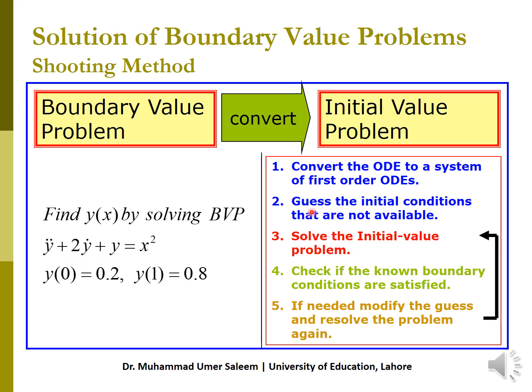We make an initial guess and solve the initial value problem — this is the first attempt. Then we check if the boundary conditions are satisfied; if so, that guess worked fine. If not, we modify the guess — this is the second angle. We repeat the complete process. If boundary conditions are satisfied we are done; if not, we go for a third guess. But this time we do not make a raw guess — we use interpolation to make a guess that satisfies both the initial and boundary conditions.